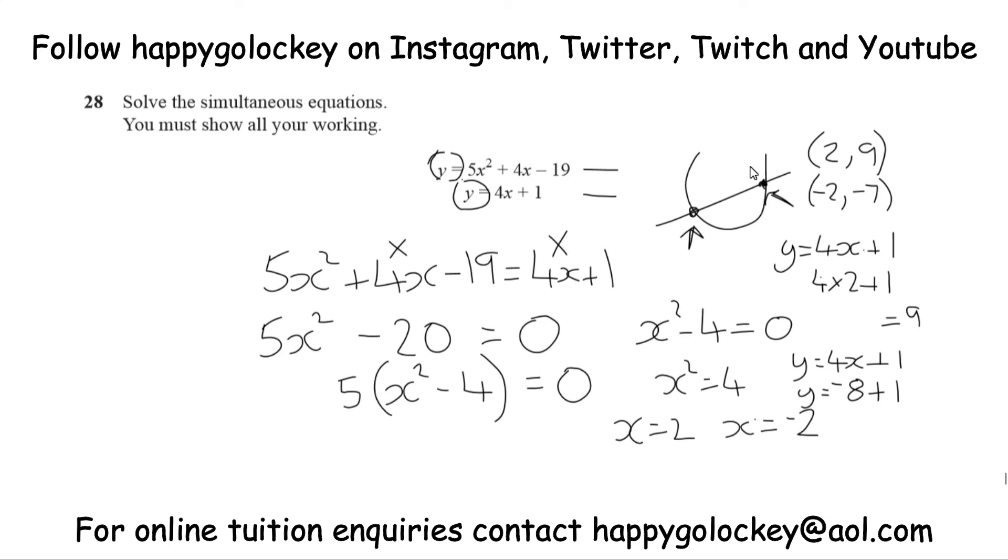And we could always check that actually works by plugging that into a different formula. Let's use the top equation just to check that this actually works. If x is 2 and y equals 9, then we've got 9 equals 5 lots of 2 squared, 5 lots of 4, 20, plus 4 lots of 2, which is 8, that's 28, and 28 take away 19. 28 take away 19 is 9. So it works for the first one, for the positives.